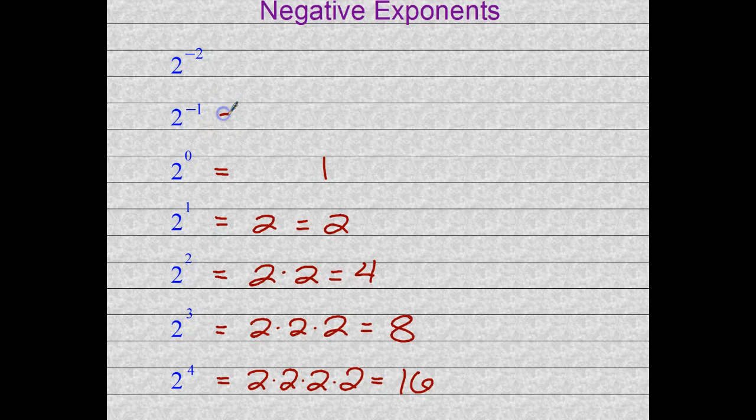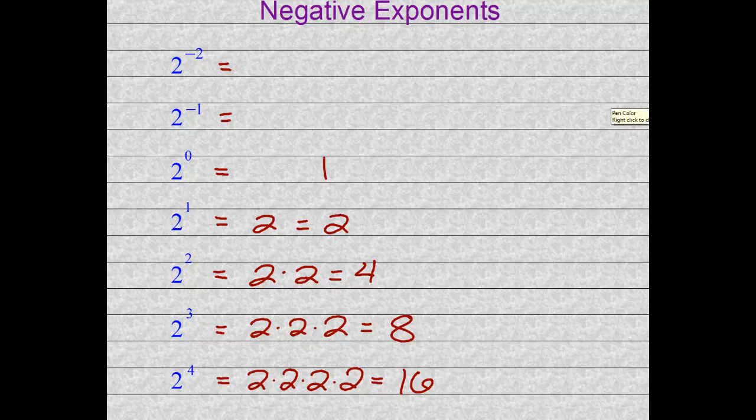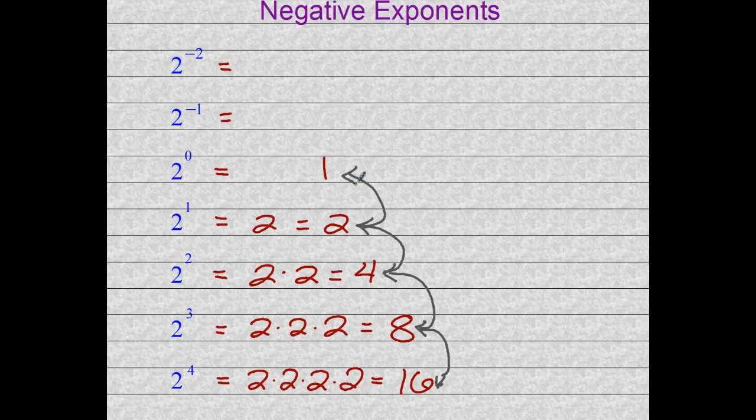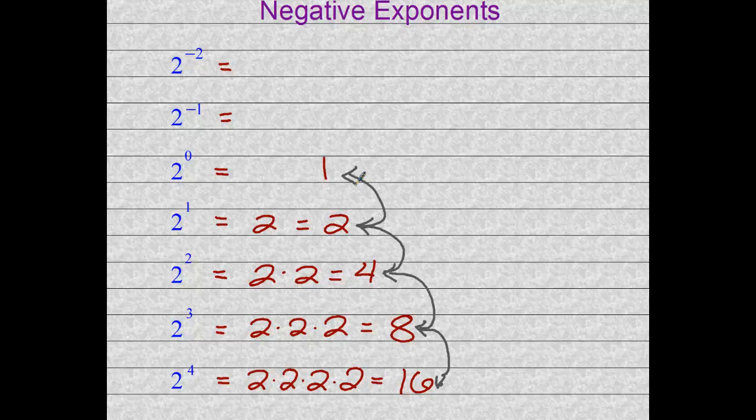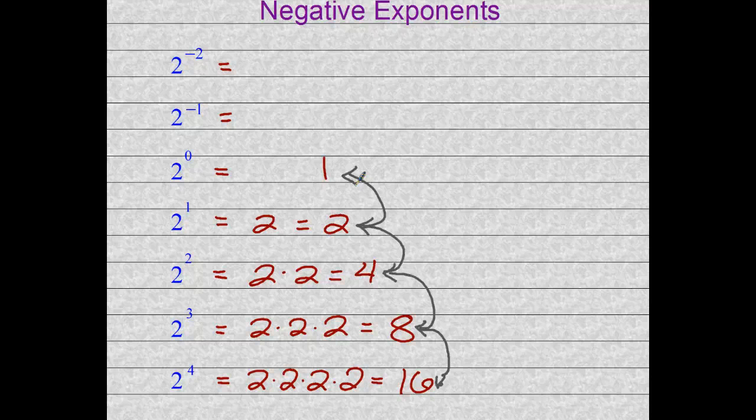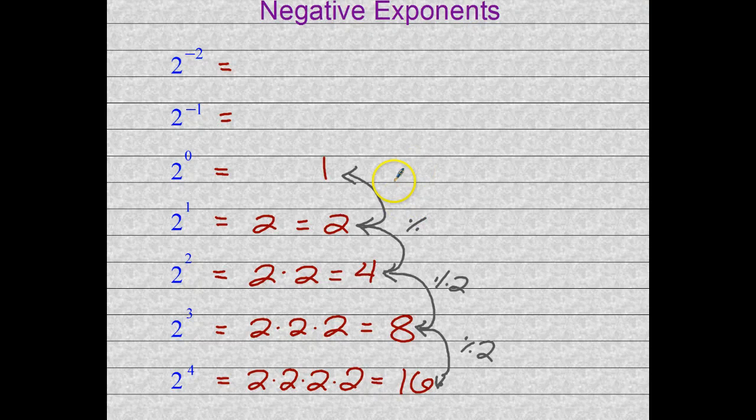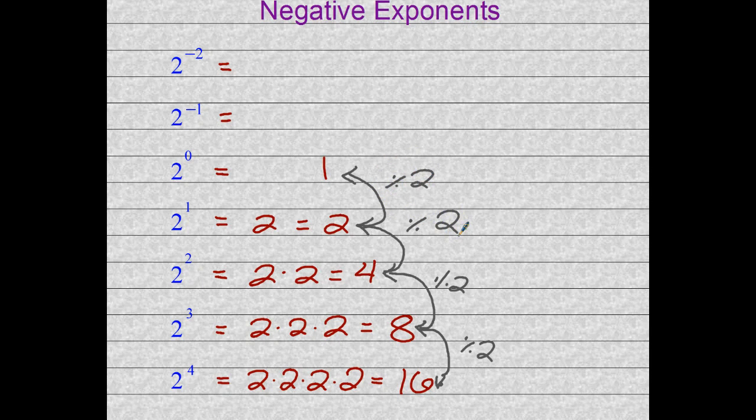And here we are with these new exponents, and they're both negatives. Well, if we look at the pattern from the bottom to the top, what are we doing as we get from one number to the next, to the next, and so on and so forth. It looks like when we go from 16 to 8 and 8 to 4 and 4 to 2, there's a little pattern here. And it looks like what we're doing is we're either multiplying by half or also dividing by 2. So if I were to keep dividing by 2, 16 divided by 2 is 8. 8 divided by 2 is 4. 4 divided by 2 is 2. And 2 divided by 2 is equal to 1.